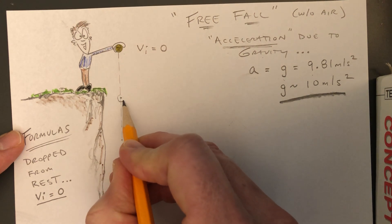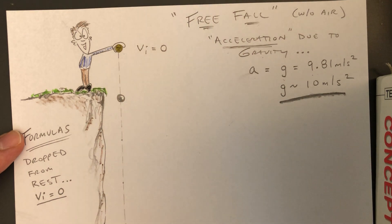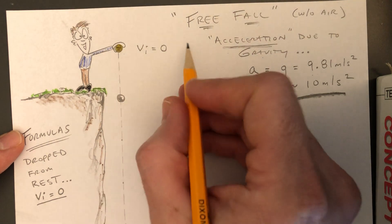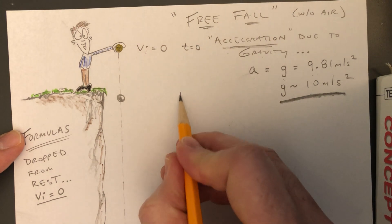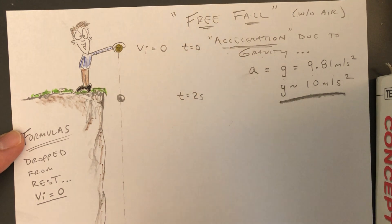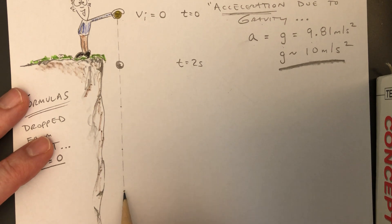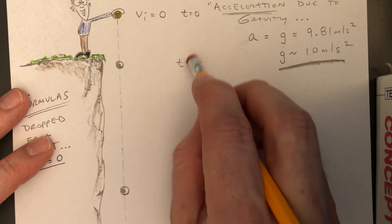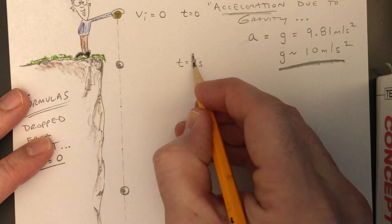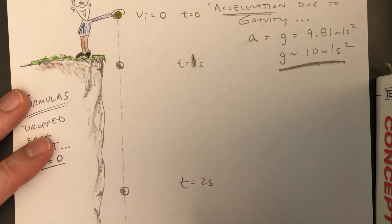Every second, we took a look at where that object would be. Well, one second later, the object might be right about here. Two seconds later, where the object would be, it would not be the same distance, it would be even further down. So that object would be all the way down here at t equals two seconds.